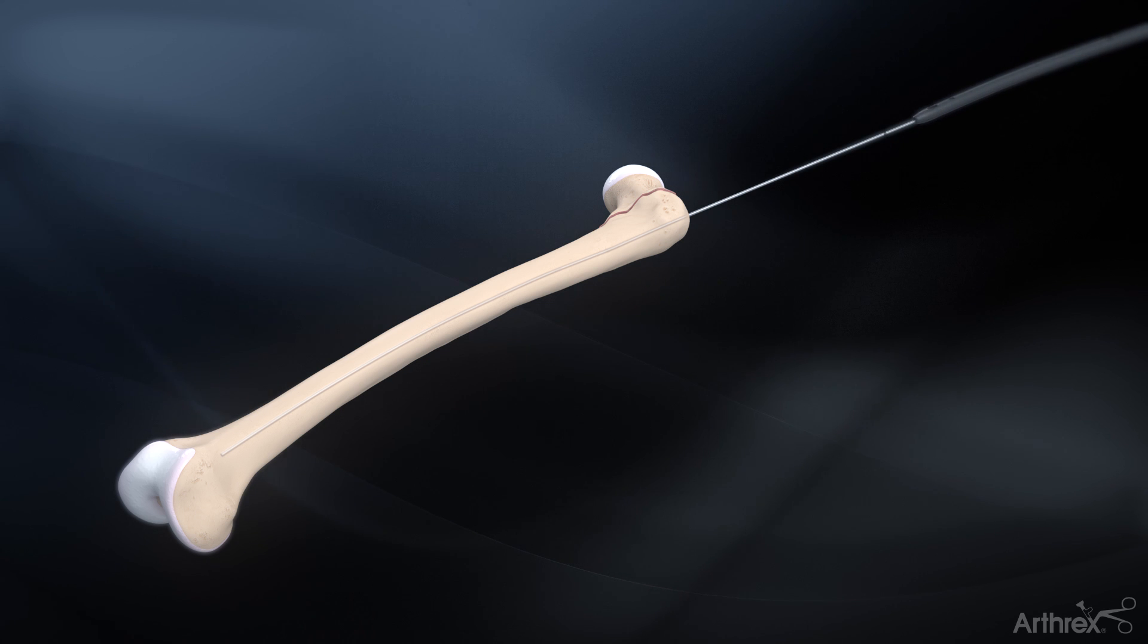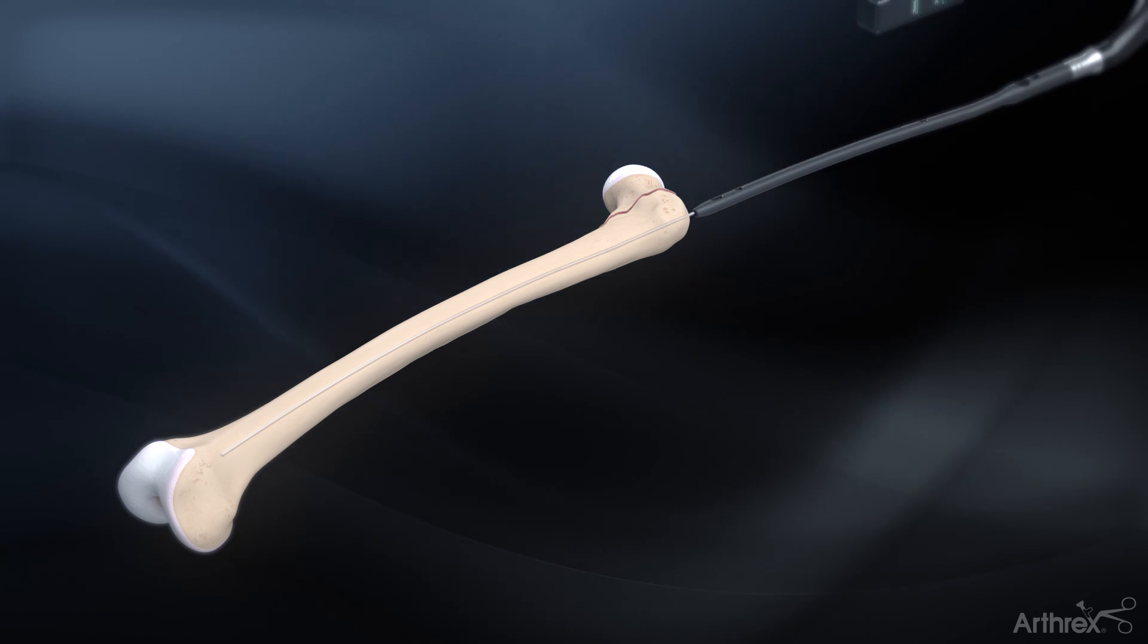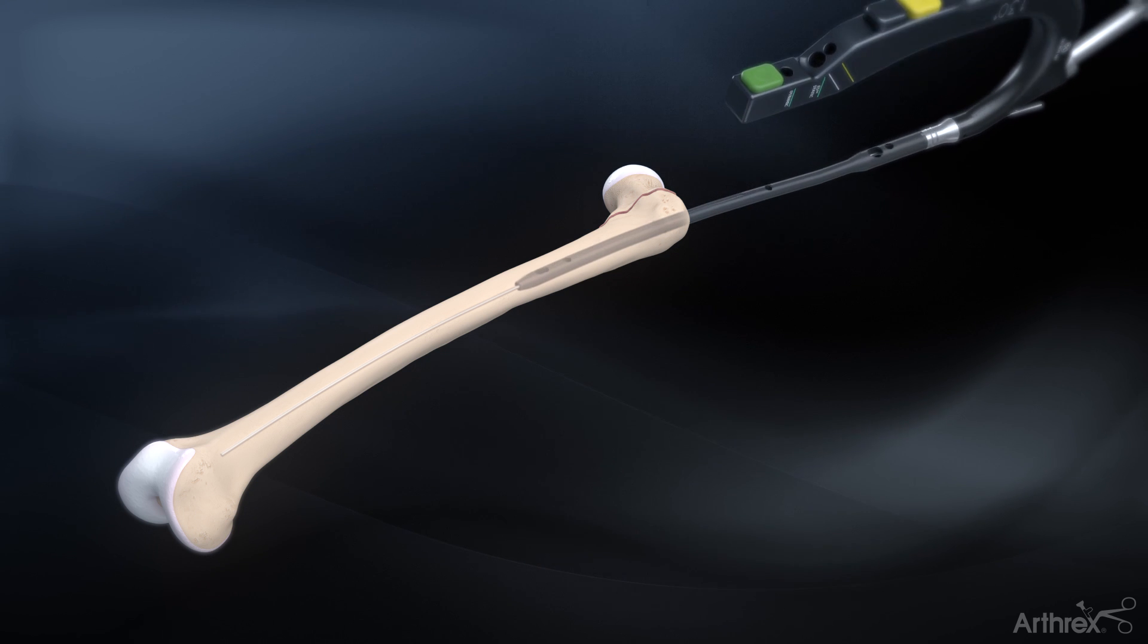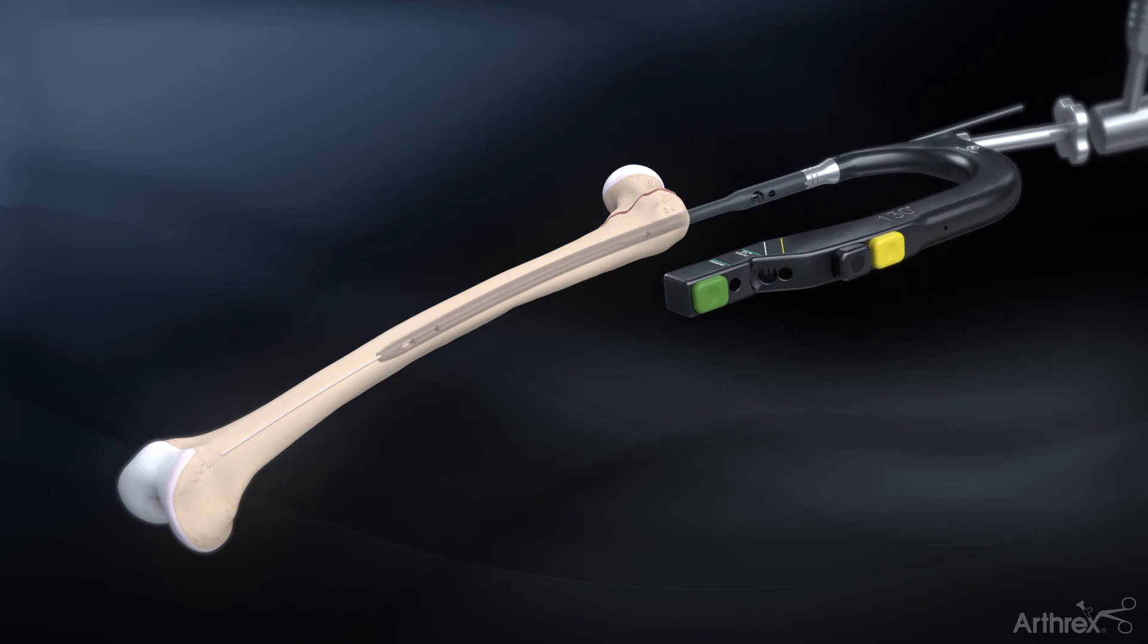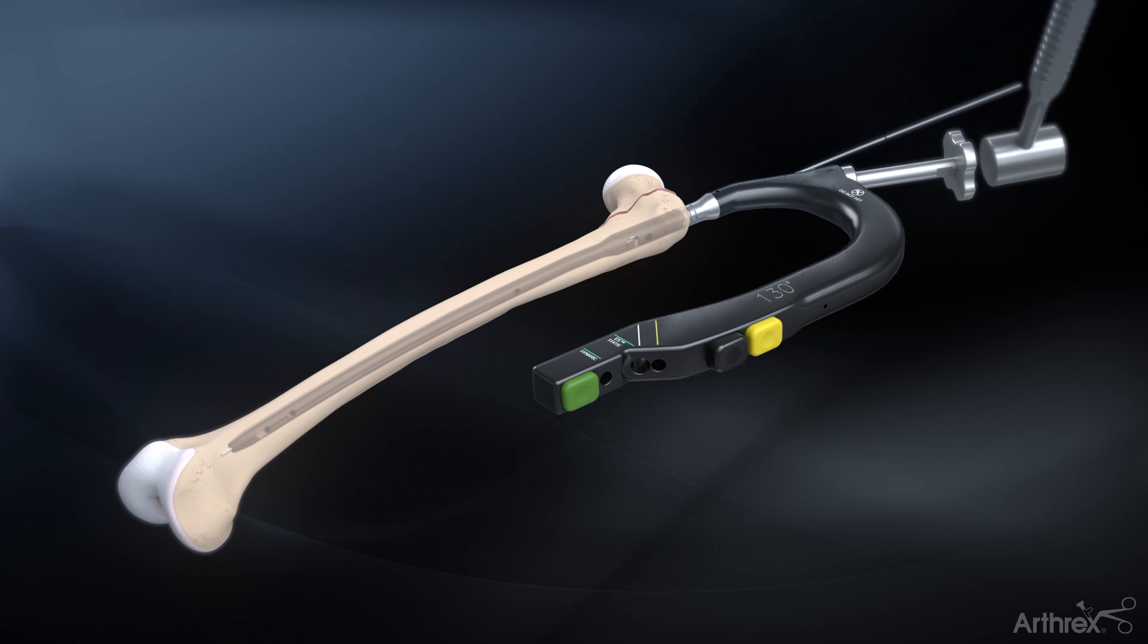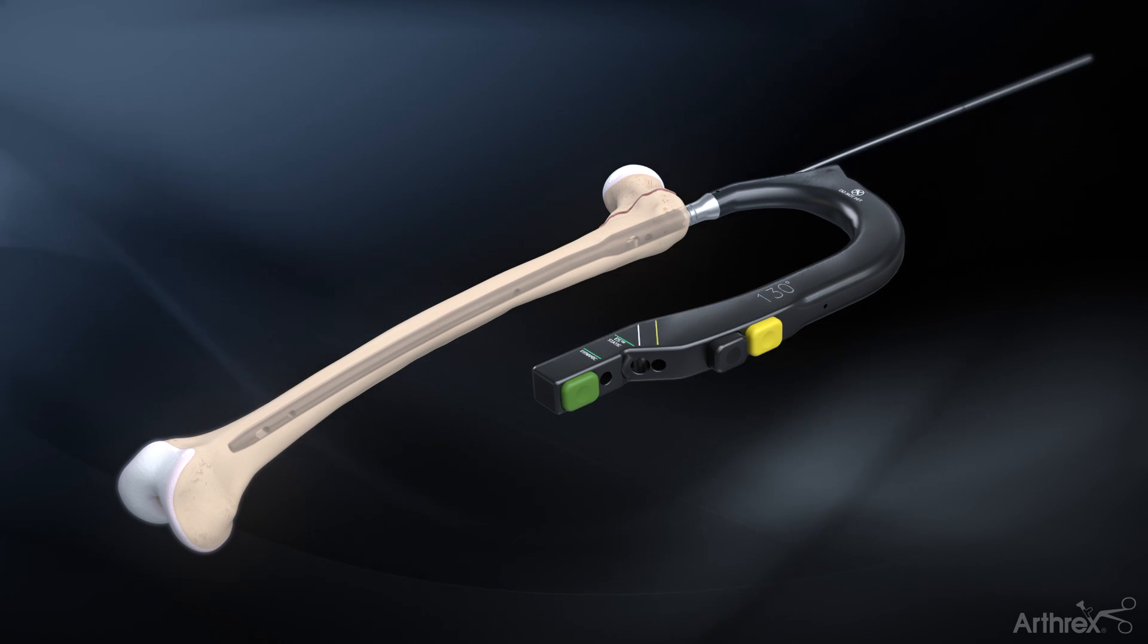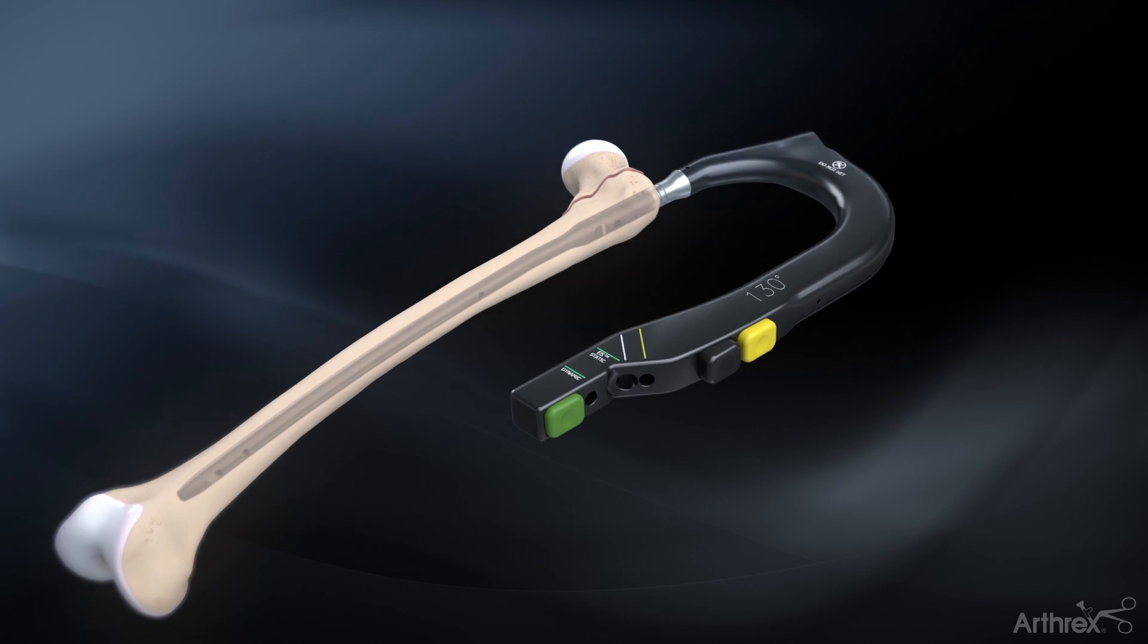Introduce the nail into the proximal femur over the guide wire using the radiolucent targeting arm to control nail rotation. Complete the insertion with gentle mallet strikes on the impactor pad.